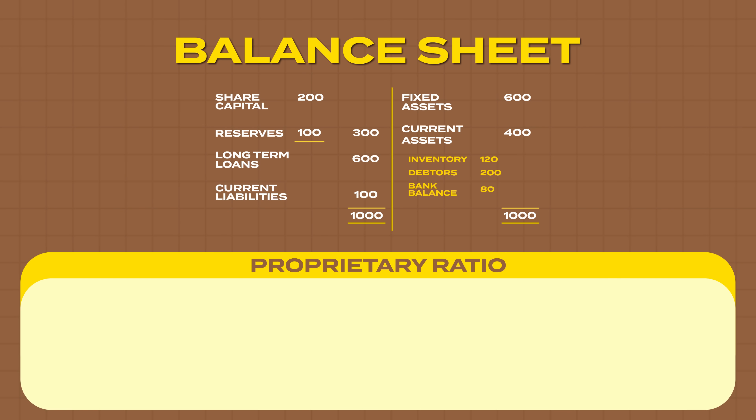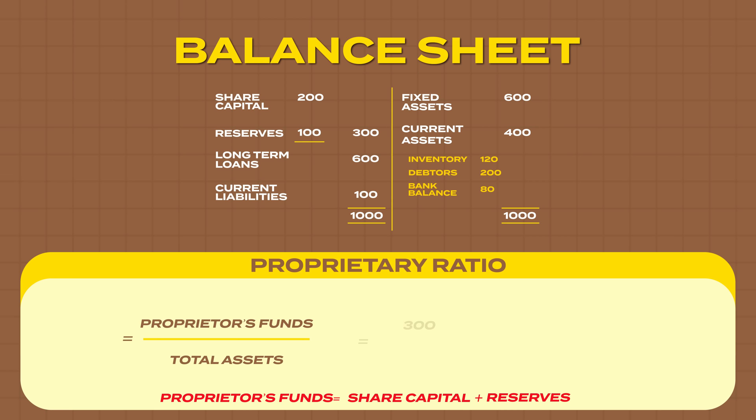Then there is a ratio called proprietary ratio. How much money have the owners invested in this company? Proprietors' investment is represented by capital plus reserves — owners have invested 300. Total assets are 1,000. Out of total assets of 1,000, 300 has been funded by the owners. So the proprietary ratio is 30% or 0.3. Who is happy when the proprietary ratio is high? Obviously the lender — the bankers. There is a phrase in banking parlance: skin in the game. Bankers love it when the owners have more skin in the game. Higher the proprietary ratio, greater the owner's skin in the game, and that makes the banker relatively more comfortable.